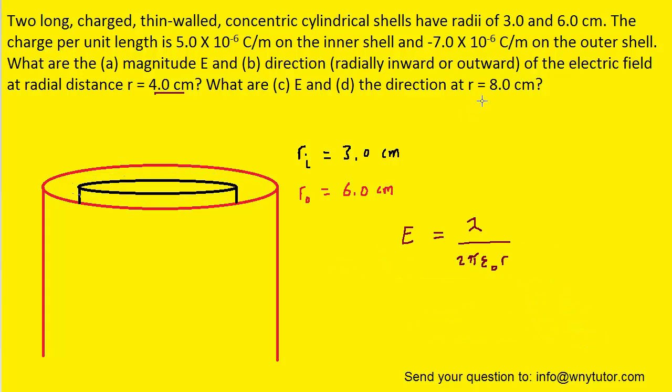Now in parts C and D, the distance has changed to 8 centimeters. When we measure that distance from the center of the cylindrical shells out to 8 centimeters, we can see that our Gaussian surface, which is indicated by this blue circle, would include both the inner and the outer cylindrical shell.